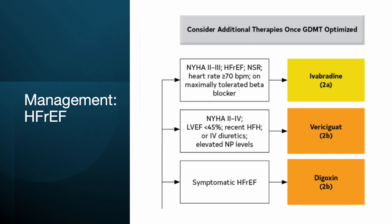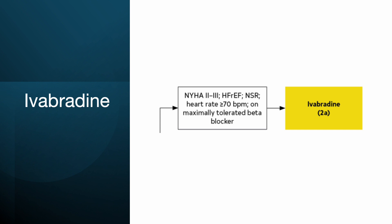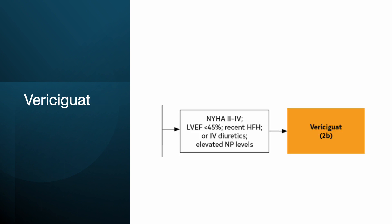If a patient with HFrEF remains symptomatic despite being on guideline-directed medical therapy, consider adding ivabradine, vericiguat, or digoxin. Ivabradine is a sinoatrial node modulator that inhibits the f-current in the sinoatrial node, slowing heart rate. Choose this medication in patients with heart failure whose heart rate remains elevated above 70 beats per minute despite optimal beta blocker dosing. Vericiguat can be added in patients optimally treated with GDMT and is recommended in those with LVEF less than 45% and a recent heart failure hospitalization.